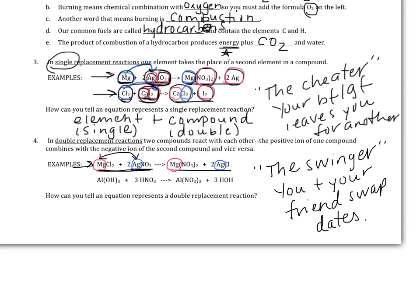You start off — magnesium and chlorine are on a date, silver and nitrate are on a date. Somewhere along the way, something happens and they decide to swap. By the end of the night, magnesium and nitrate are leaving together, and silver and chlorine are leaving together. Who needs soap operas? You've got chemistry right here.